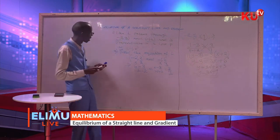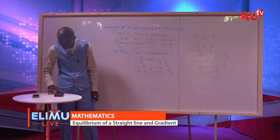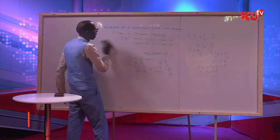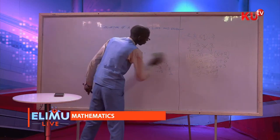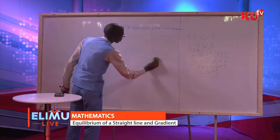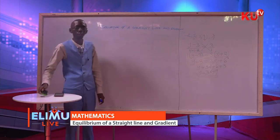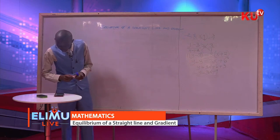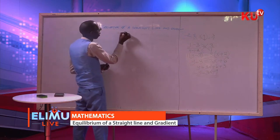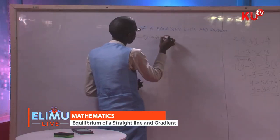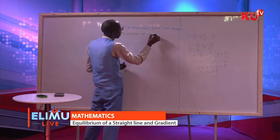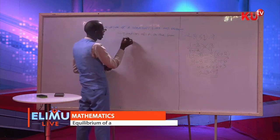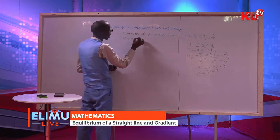Question number B of the same question: find the equation of P. Remember that P is perpendicular to L. Find the equation of P in the form AX plus BY is equal to C.